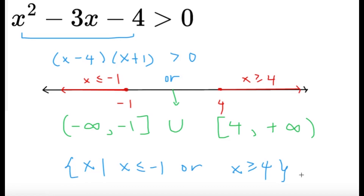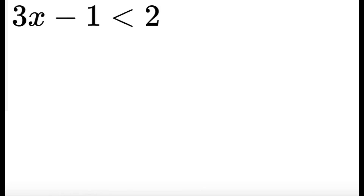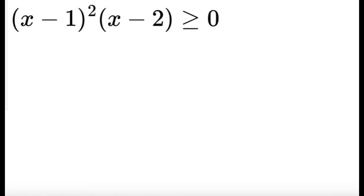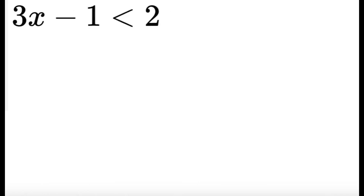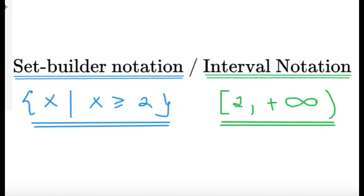Here are three practice examples for you to try: 2x² − 5x − 3 ≤ 0; 3x − 1 < 2; and (x − 1)²(x − 2) ≥ 0. Write your answers in both set builder notation and interval notation and share them in the comments. This wraps up the fifth episode on set builder notation and interval notation — hopefully you learned something new. See you in the next one!